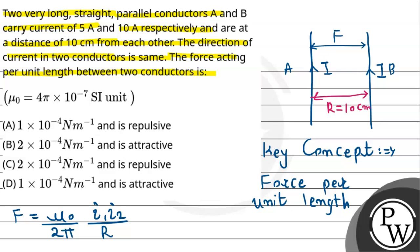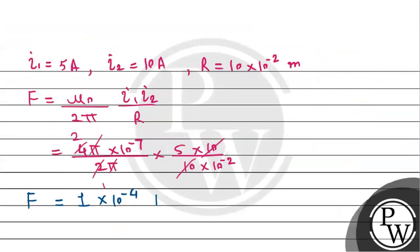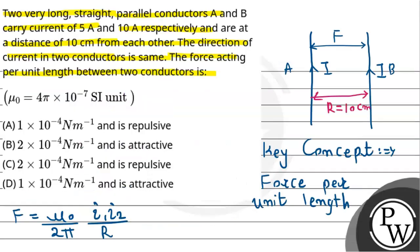And the unit will be newtons per meter, because we have used the concept of force per unit length. And therefore this will be the required solution to this question. As per the given options, 1 into 10 to the power minus 4 newtons per meter.